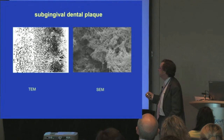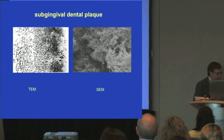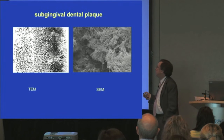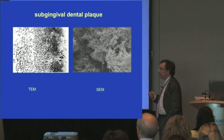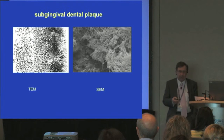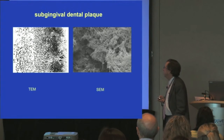This is a transmission electron micrograph of dental plaque, and this is a scanning electron micrograph of dental plaque. For many, many years, that was the only real way we could look at dental plaque. But remember, any form of electron microscopy involves a dehydration step, so the whole structure collapses. From transmission and scanning electron microscopy, you can't really get to grips with the true structure of dental plaque.